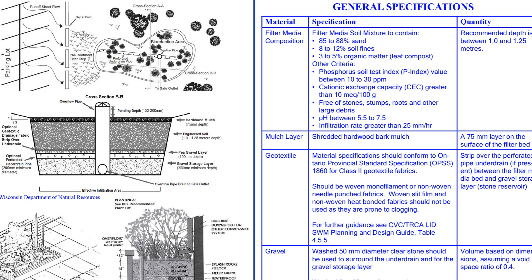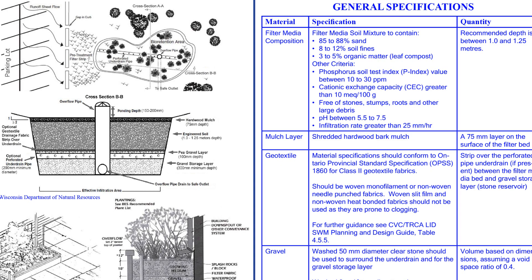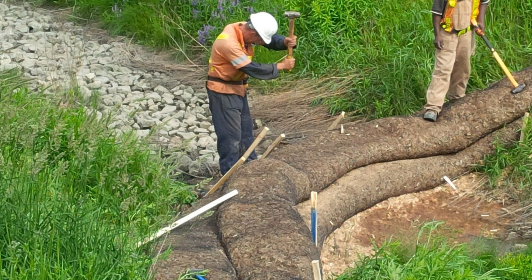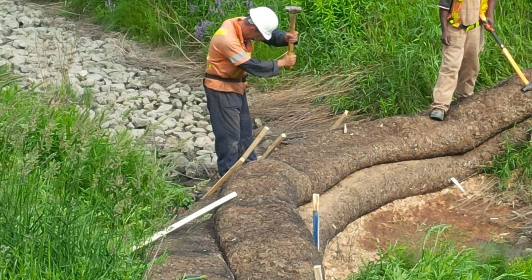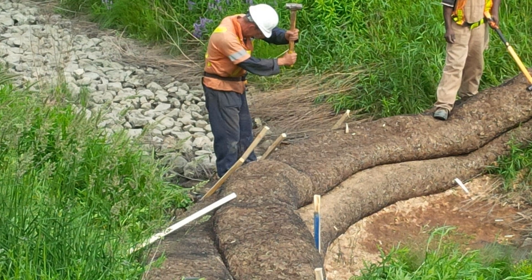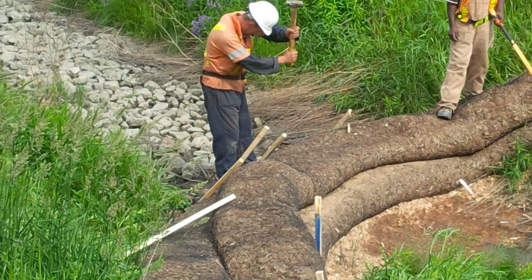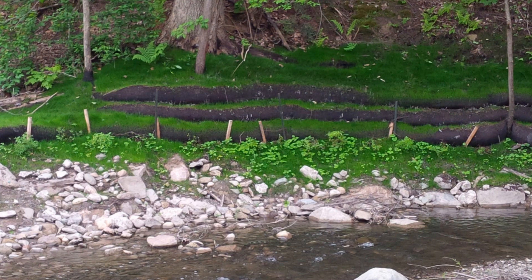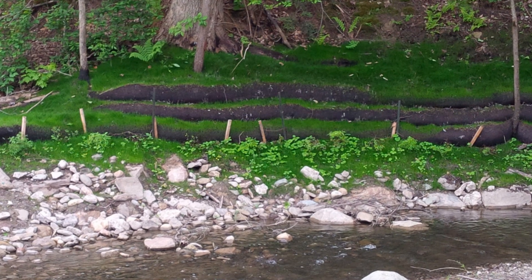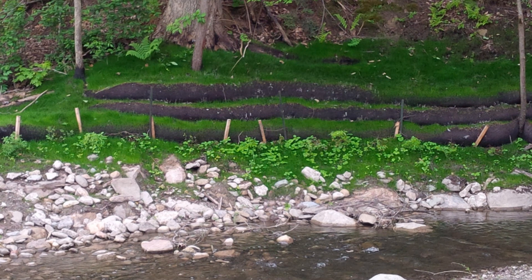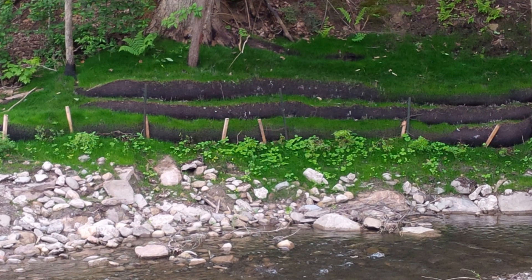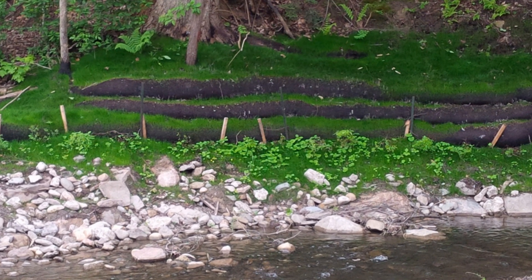It's a lot easier to address any issues during implementation than trying to make repairs or changes post-construction. Detailed material specifications should be included in the construction notes. It's important to make sure you have the correct materials at every stage of construction. The drawings and notes should also include installation and sequencing areas, as well as an erosion and sediment control plan that protects both the area adjacent to the worksite and construction materials stockpiled on-site.